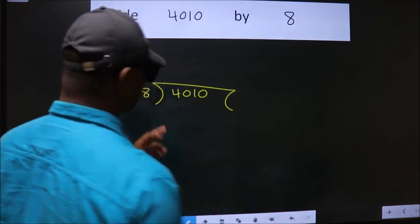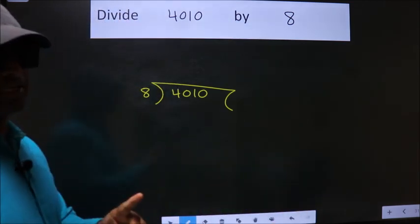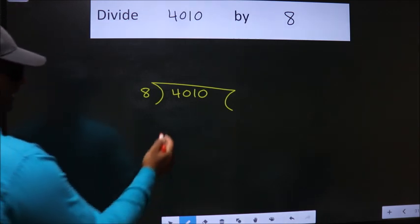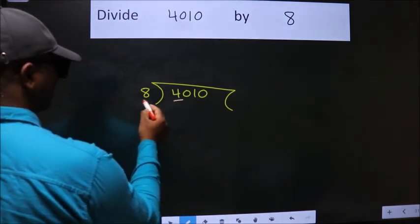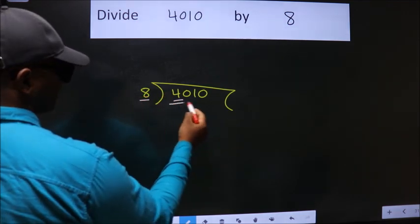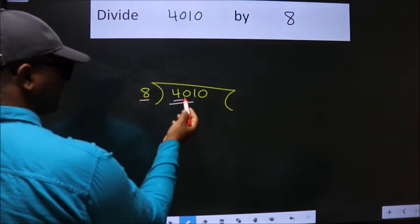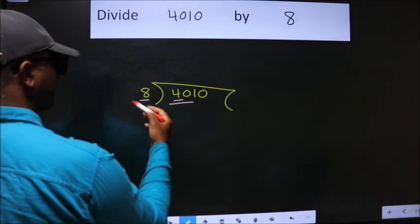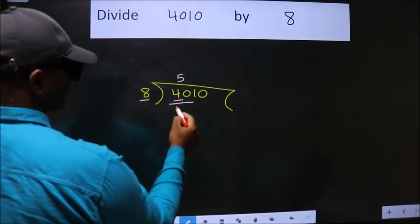This is your step 1. Next, here we have 4, here 8. 4 is smaller than 8, so we should take two numbers, 40. When do we get 40 in 8 table? 8 fives, 40.